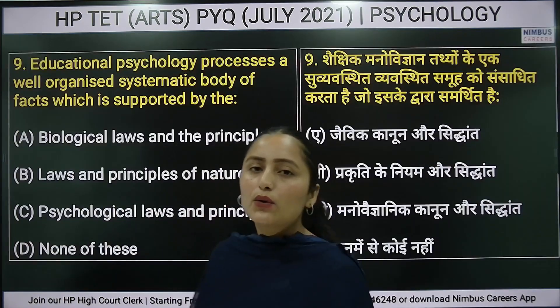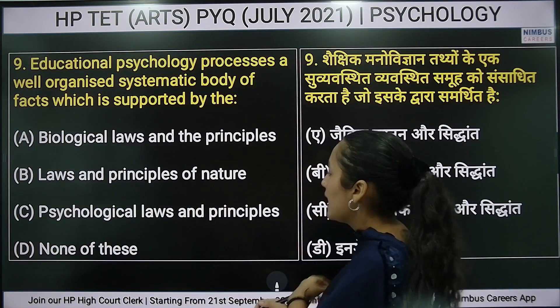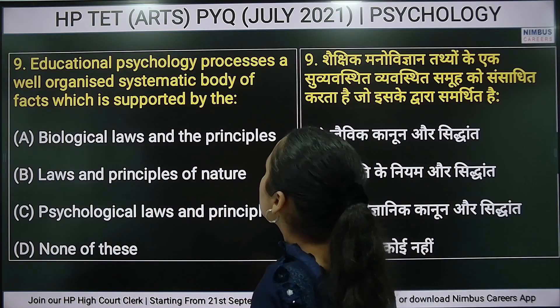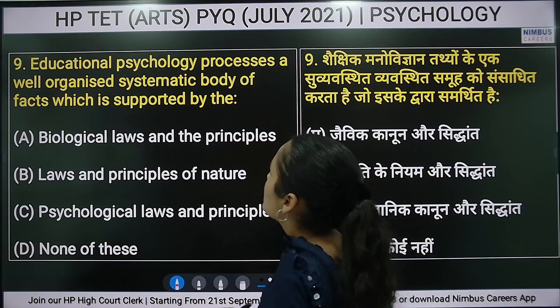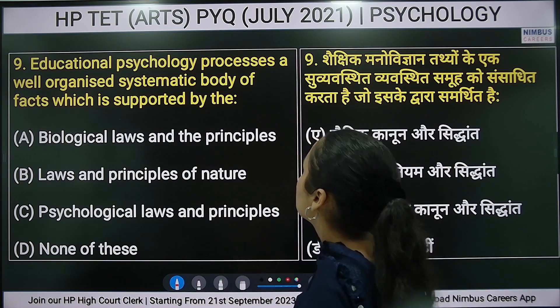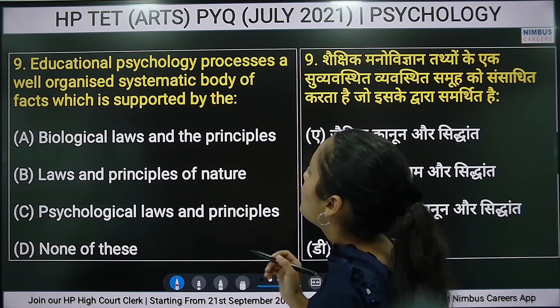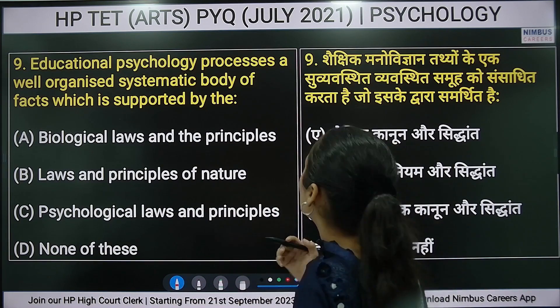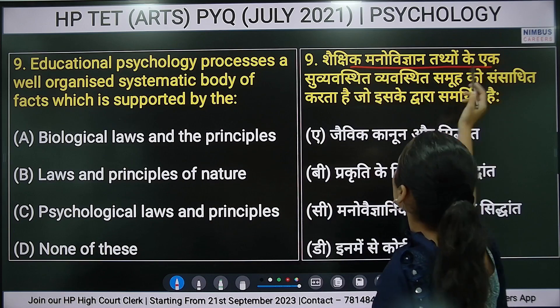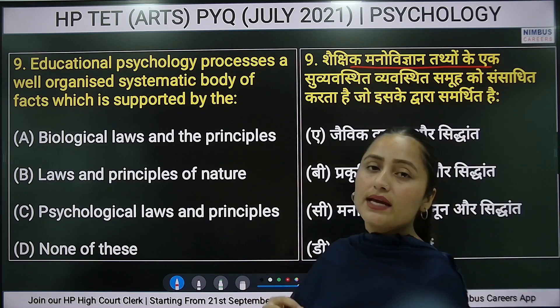Question number nine: educational psychology process is a well-organized, systematic body of facts which is supported by — this question refers to what educational psychology organizes and systematizes.